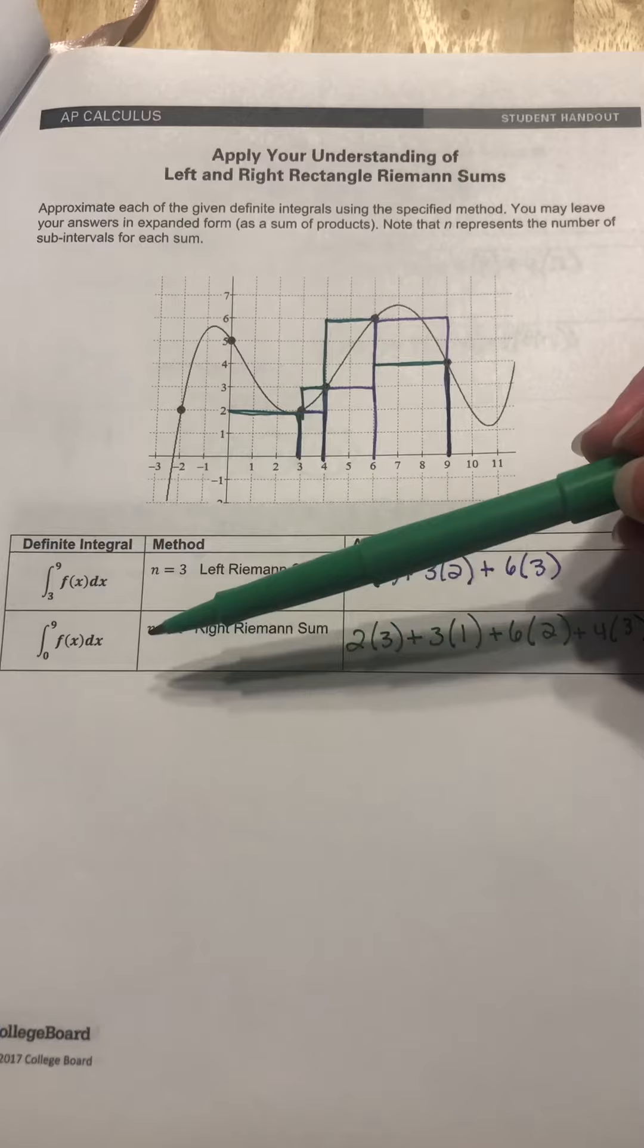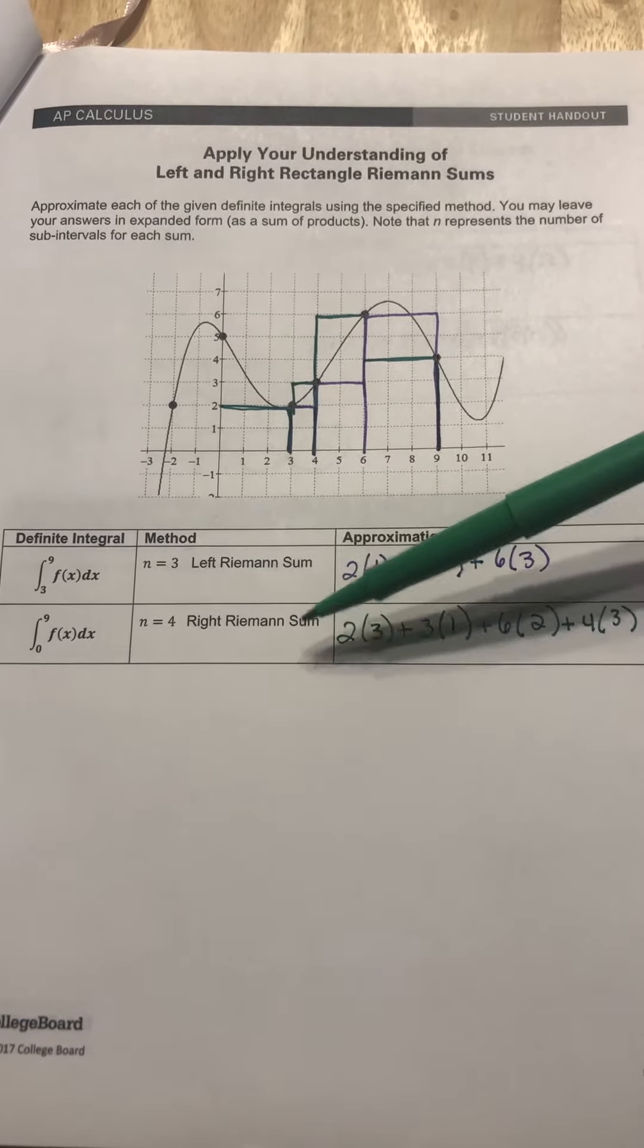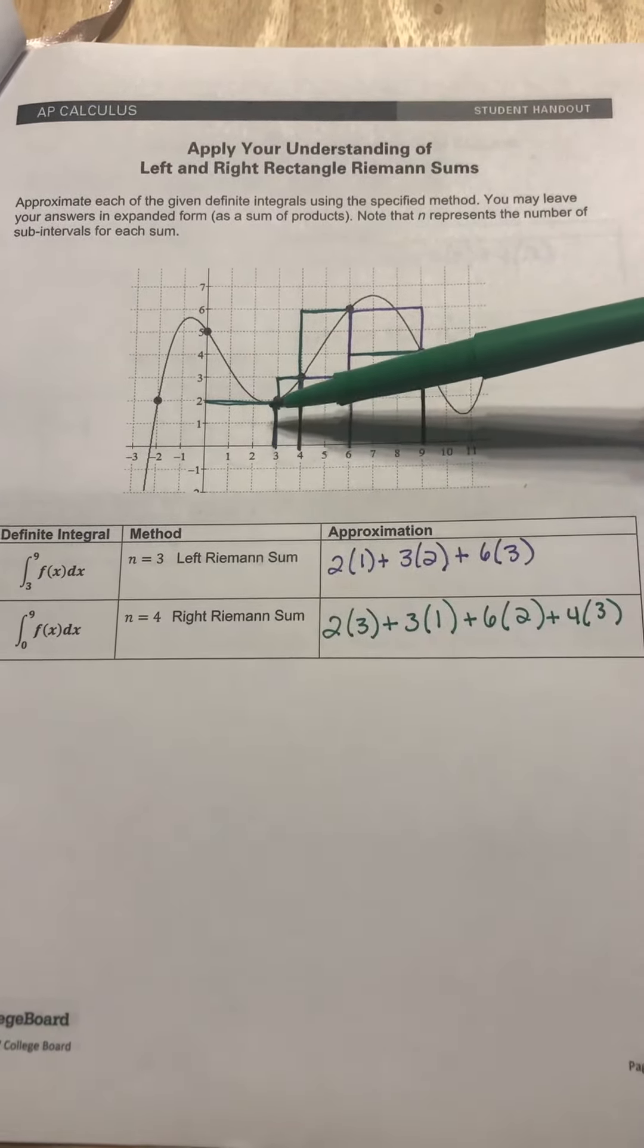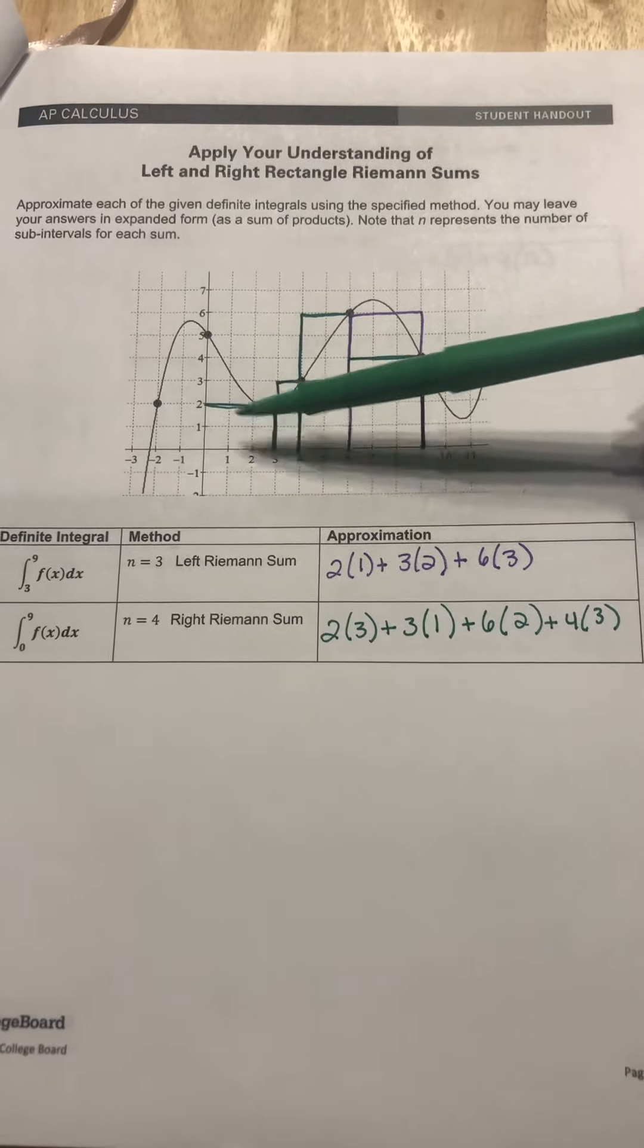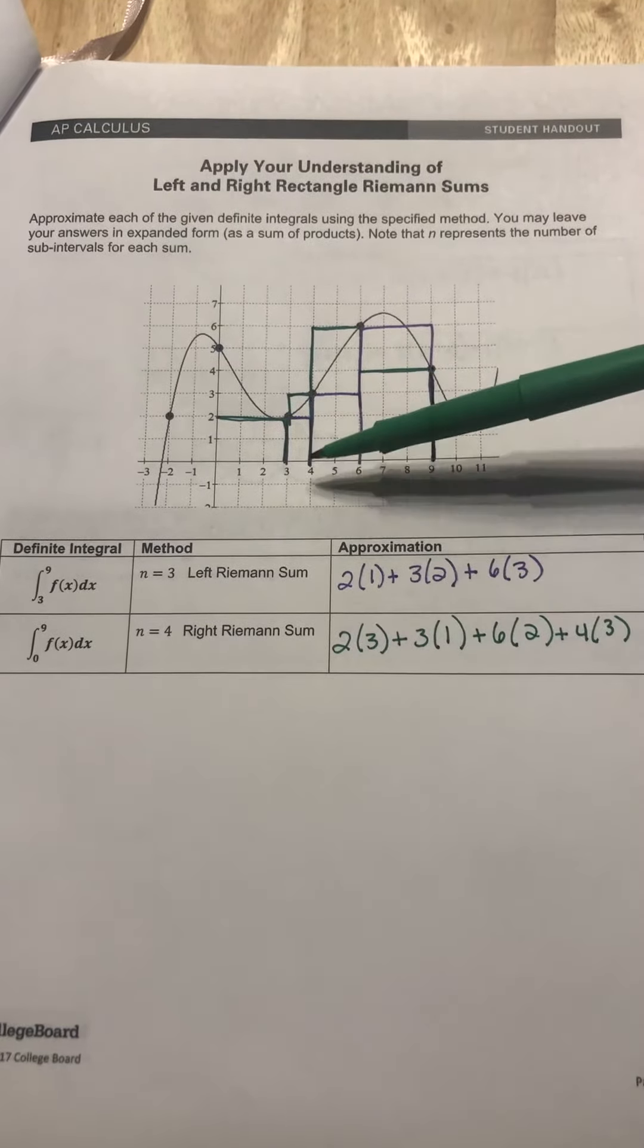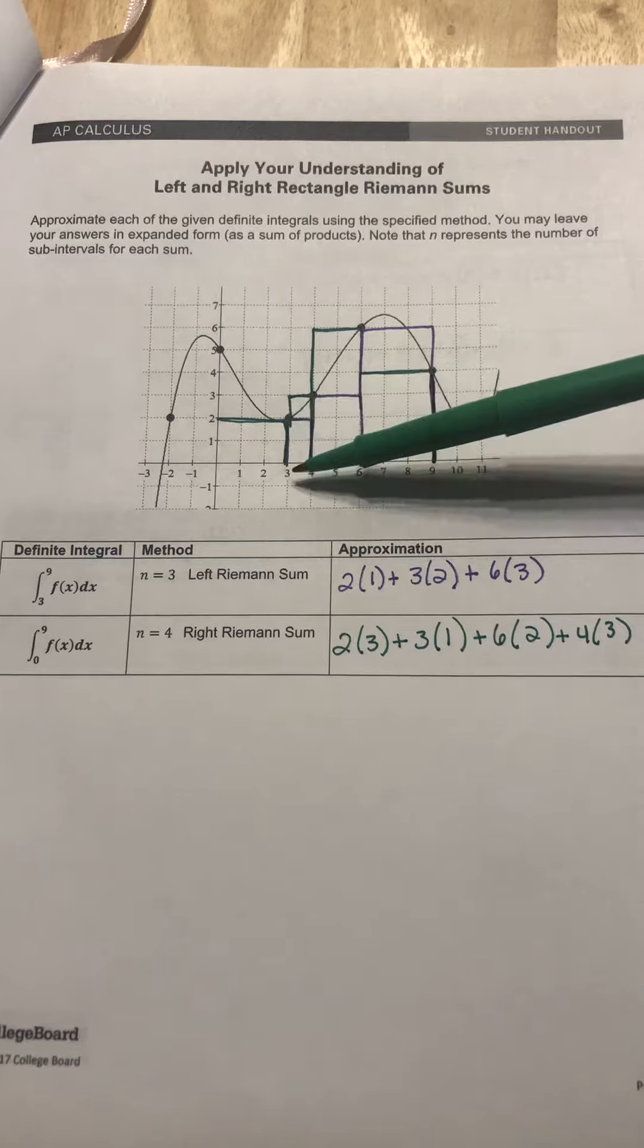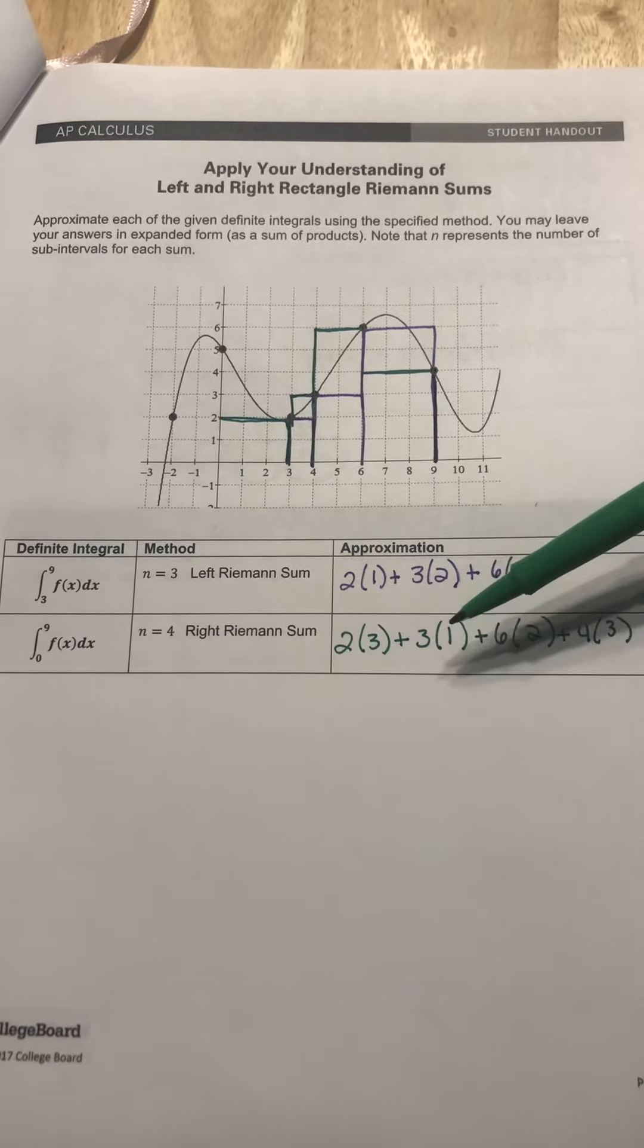And then for this one from zero to nine, they want you to do four intervals and it's a right Riemann sum. So you're going up to a height of two and it's three wide, so two times three. This one goes up to three and then it takes up one space, so three times one.